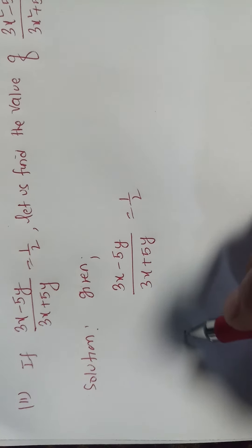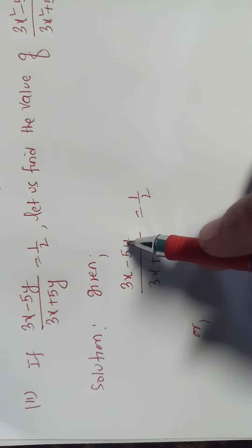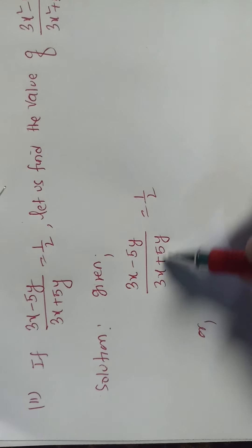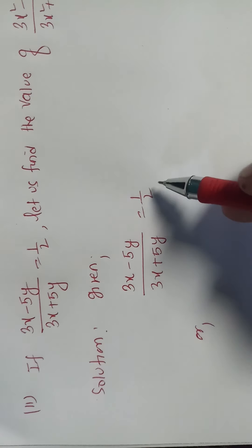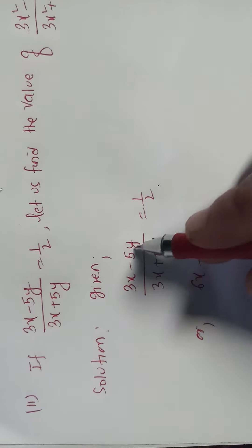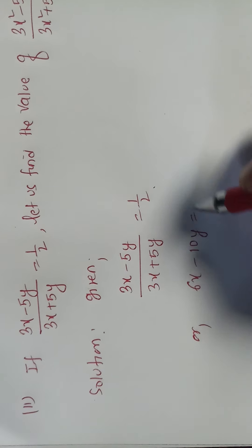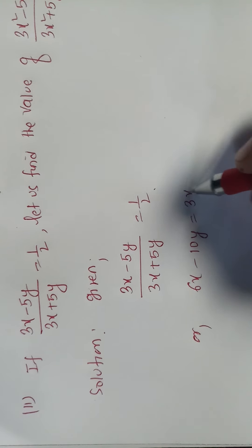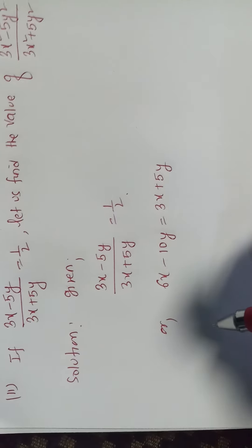So what I have to do is cross multiply. 2 times this equals to 1 times the other one. Then next step,